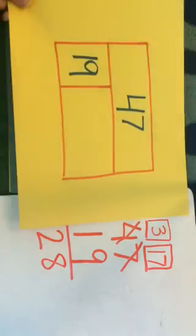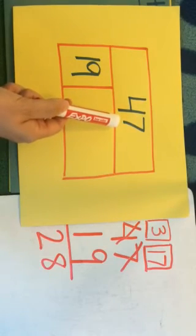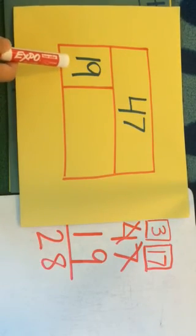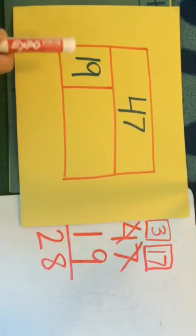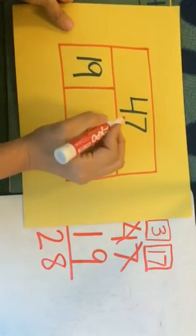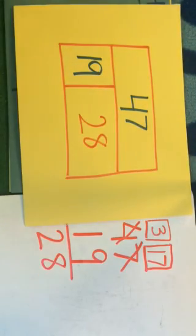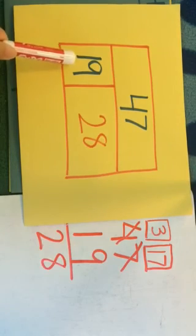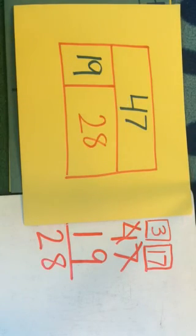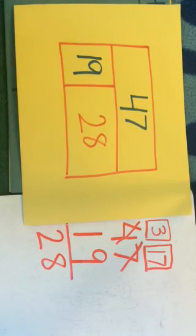If I come back to my part-part-whole, I had forty-seven apples that I picked. Mr. Robinson ate nineteen of those apples. I now have twenty-eight apples left. Nineteen and twenty-eight make forty-seven. Or forty-seven subtract nineteen equals twenty-eight.